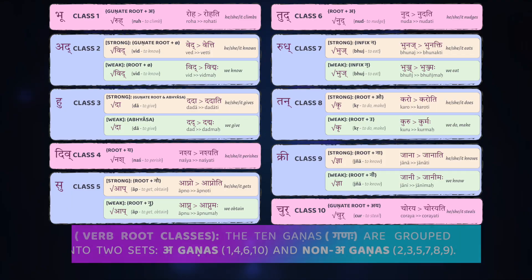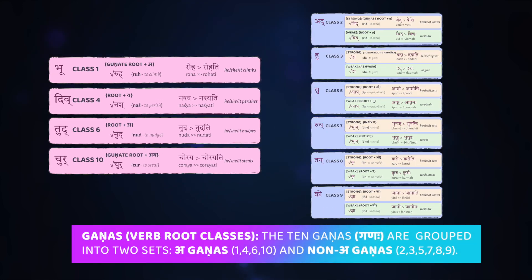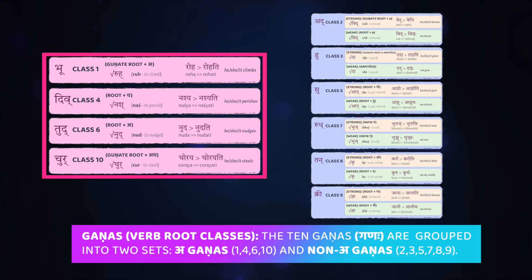Namo Namaha! Welcome back! Now in this segment, let's turn to the third of our four a-ganas. These are verb classes that involve class markers containing the letter a — the a-gana.